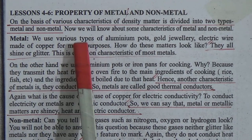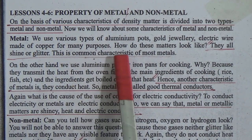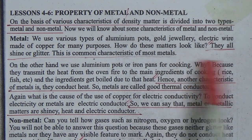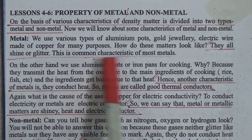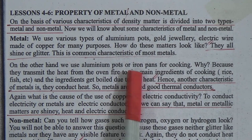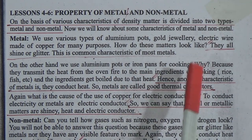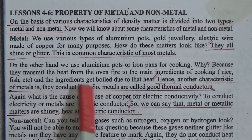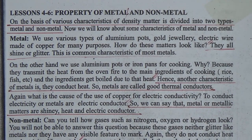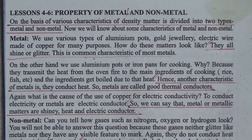We use various types of aluminium pots, gold jewellery, and electrical wire made of copper for many purposes. One common characteristic of most metals is that they shine or glitter. Another characteristic is that metals conduct heat — that is why we use aluminium or iron pots for cooking, as they transmit heat from the fire to the food. Therefore, metals are called good thermal conductors.